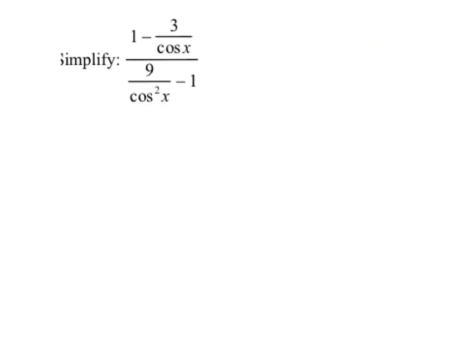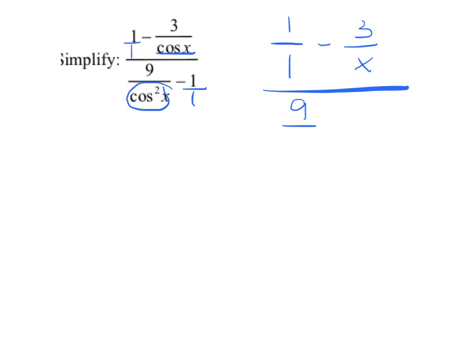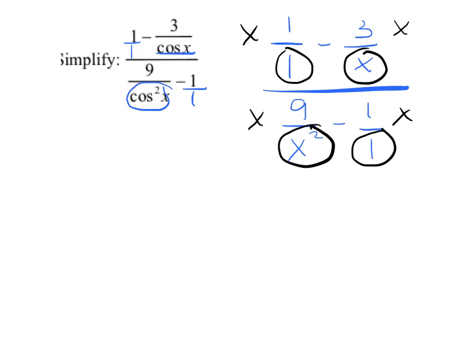It wouldn't be any fun without some trig in the mix. Turn the non-fractions into fractions over 1. If trig really bothers you, just call cosine x — then it's 1 over 1 minus 3 over x, all over 9 over x squared minus 1 over 1. That problem is simple, and it's the same thing — instead of x they use cosine squared. In this problem if you needed x squared as common denominator, what do you need here? Cosine squared. So multiply every term by cosine squared x.